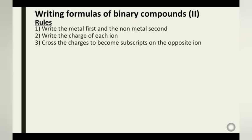Now let's move to writing the formulas of binary ionic compounds. There are three rules: first, write the metal followed by the non-metal; second, write the charge of each ion; and finally, cross the charges to become subscripts on the opposite ion.